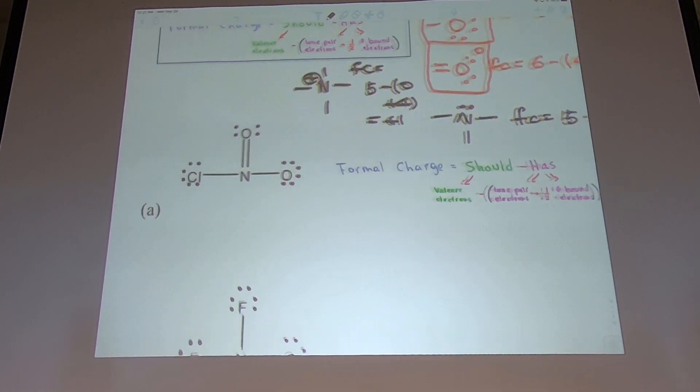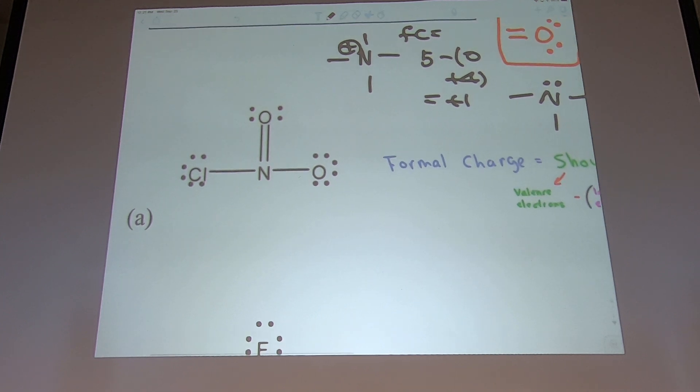Let's do this one by one. What's the formal charge of this? Chlorine is seven, that's your reference. They have, count the number of dots minus the number of bonds, so this is zero.